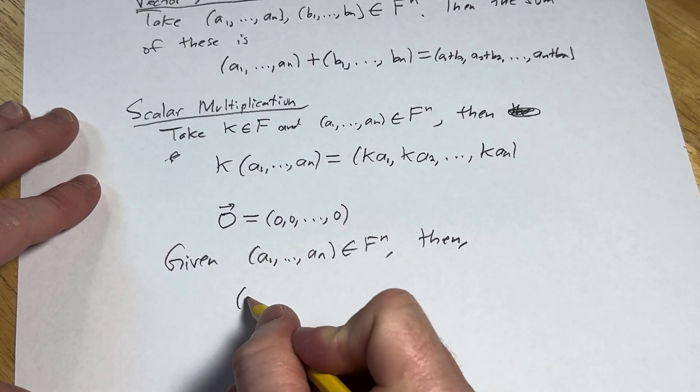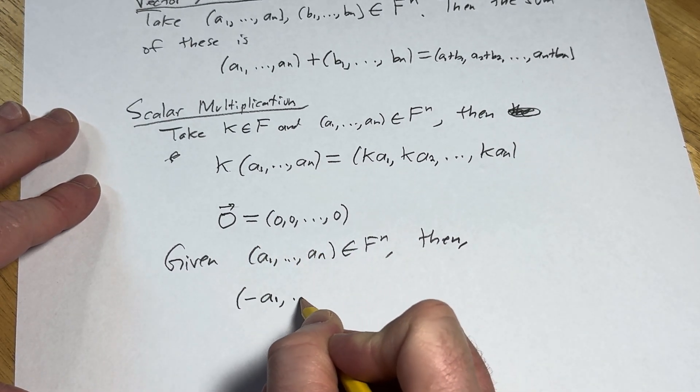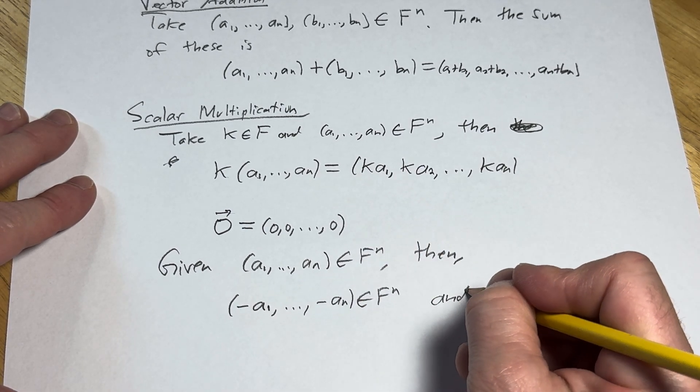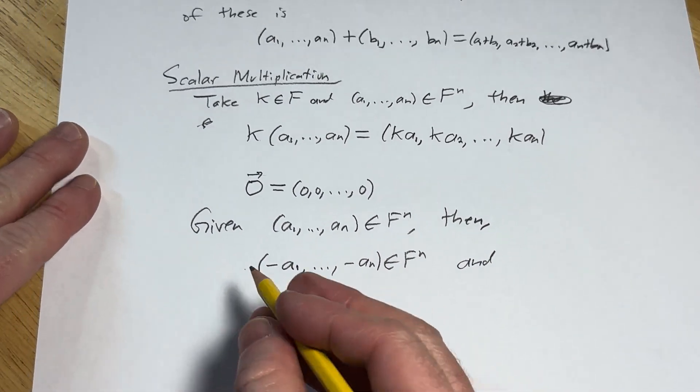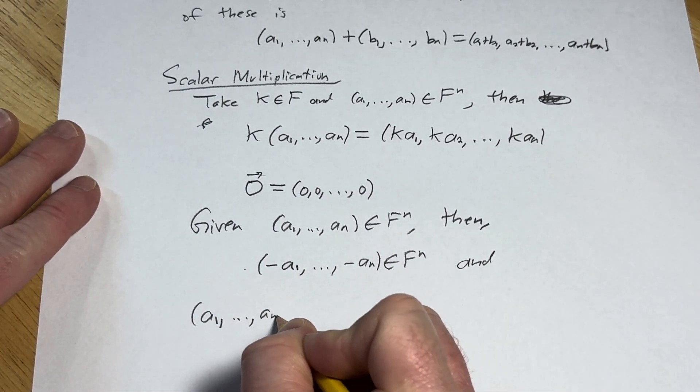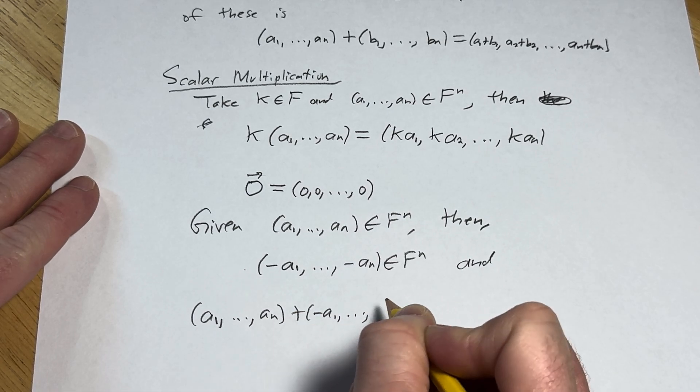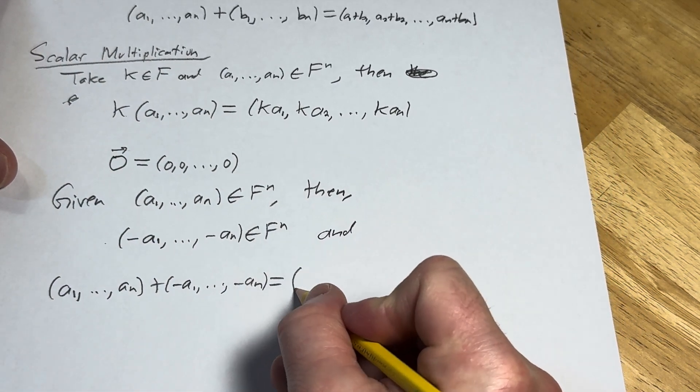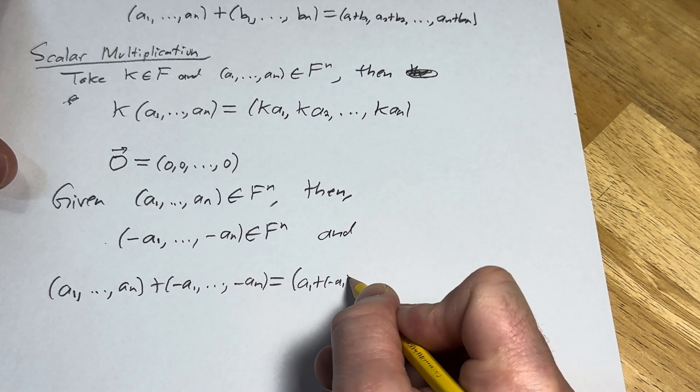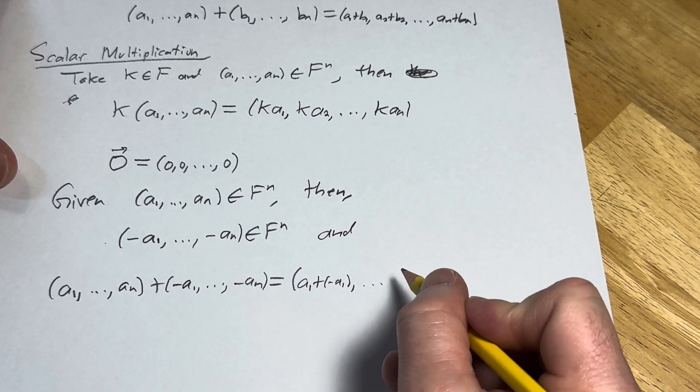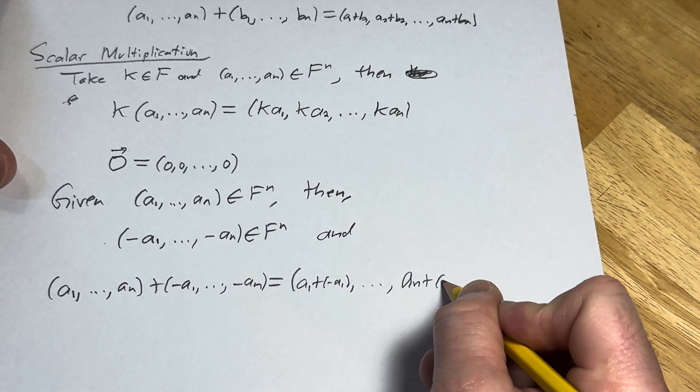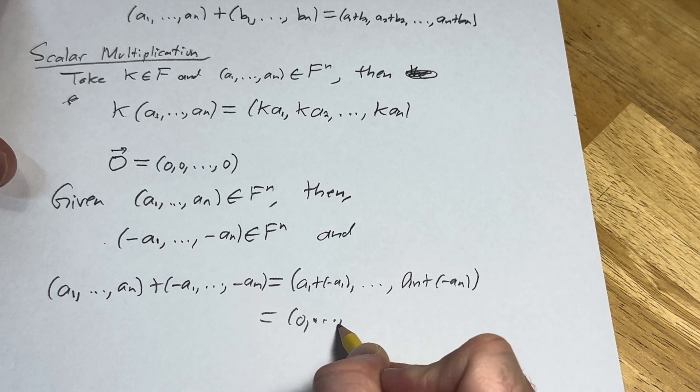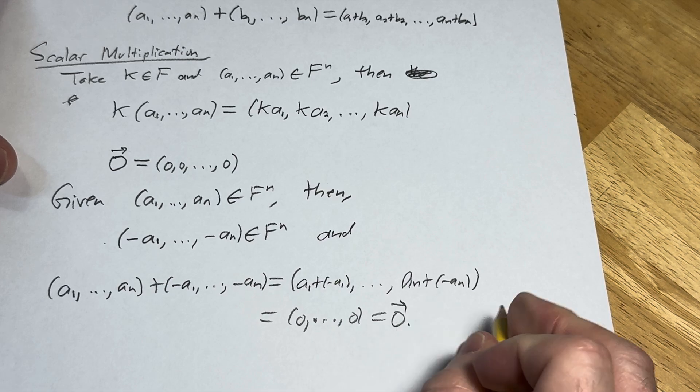then this vector here, (-a_1,...,-a_n), is in F^n. And when you add these, what happens? You're going to get the zero vector. Let's do it. So you would get (a_1,...,a_n) plus (-a_1,...,-a_n). And then using our definition of vector addition, we would use component-wise addition. So it would be a_1 plus -a_1, dot dot dot, and then a_n plus -a_n. And when you add these, you just get (0,...,0), which is our zero vector.